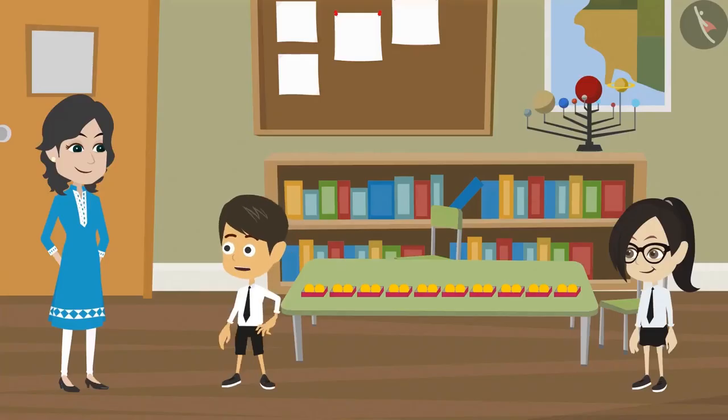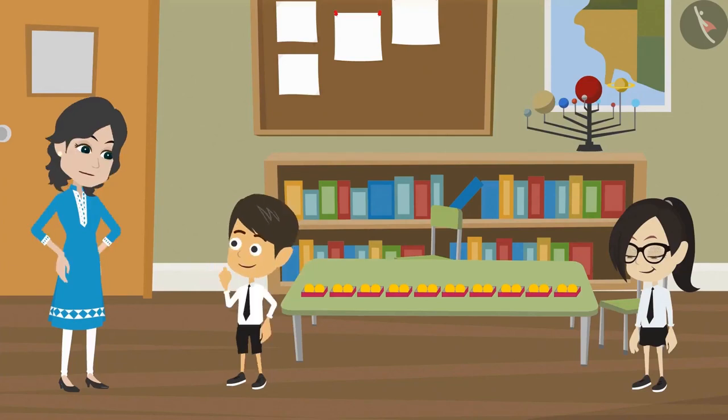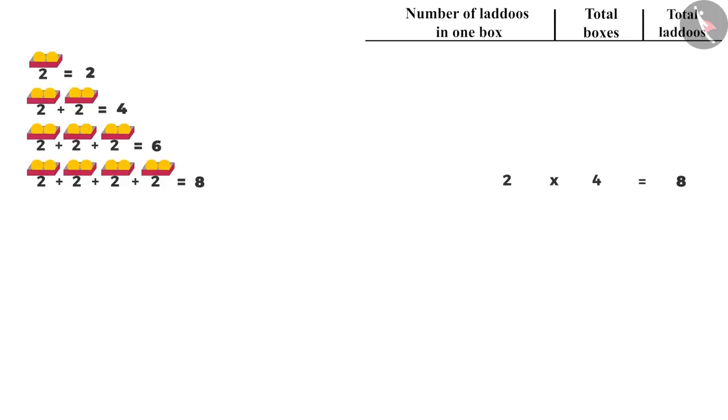That means if you multiply two by ten, will the answer be the same if you add two ten times? Yes, Riyanj. In the same way, you can convert the above additions into multiplication. If you want to find the laddus in three boxes, multiply two by three. Similarly, for two boxes, multiply two by two. And to find the laddus in one box, multiply two by one.